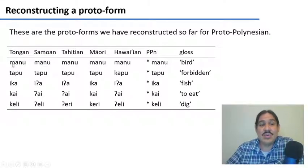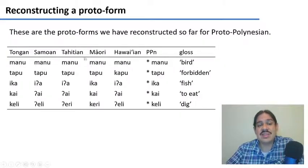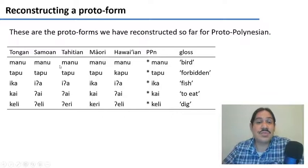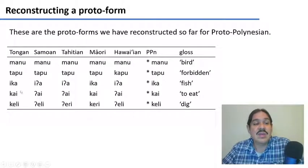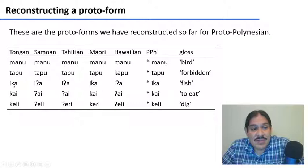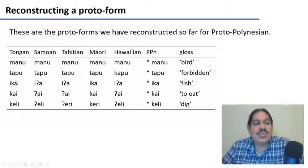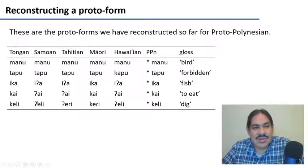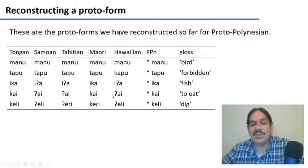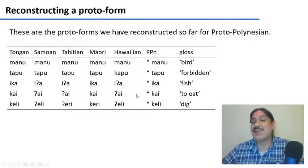We figured out that in all of the languages we saw, when we saw an M in Tongan, we also saw it in Samoan and Tahitian and so forth, and that this was a pattern observed in other words as well. This is particularly true for the K that we found here — K in Tongan always corresponds to a glottal stop in Samoan and Tahitian. So for all of these words in Tongan, whenever we see a K, we see a glottal in Samoan, a K in Maori, a glottal in Hawaiian, and so forth. These are regular sound correspondences because they apply to many words in a regular fashion.